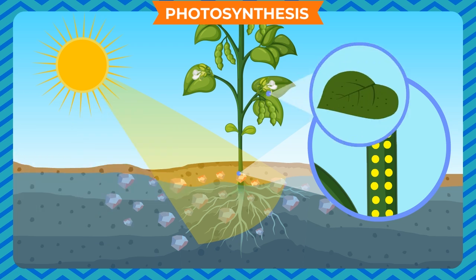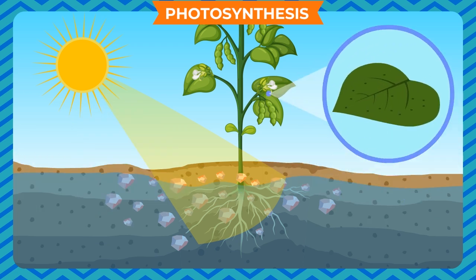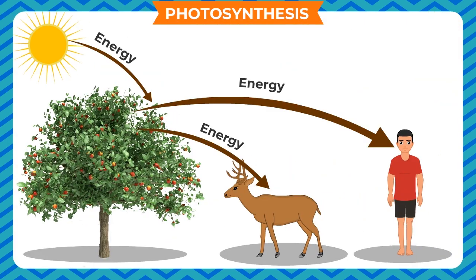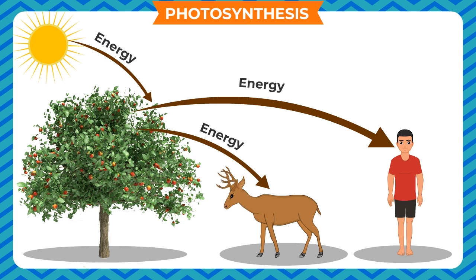In most plants, carbohydrate is converted into starch and stored in leaves, stems, roots, etc. The presence of starch in leaves indicates the occurrence of photosynthesis. The food prepared by plants provides nutrition not only to plants but also to every living organism, directly or indirectly. The oxygen released by plants in photosynthesis maintains the balance in nature and supports life on Earth.